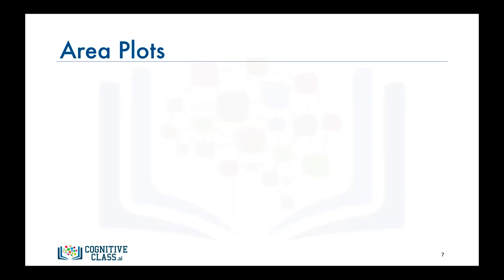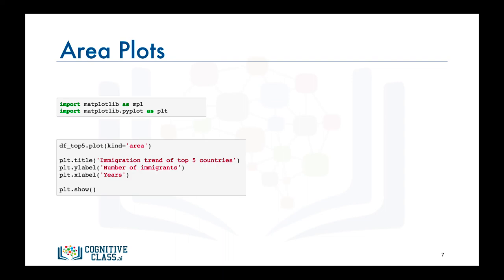To do that, first we import matplotlib as MPL and its scripting interface as PLT. Then we call the plot function on the data frame DF_top5 and set kind equals area to generate an area plot. Then to complete the figure, we give it a title and we label its axes. Finally, we call the show function to display the figure.